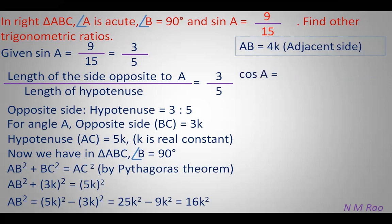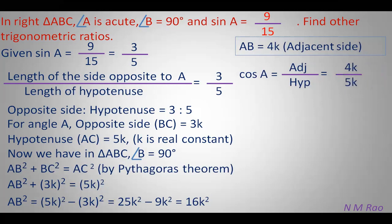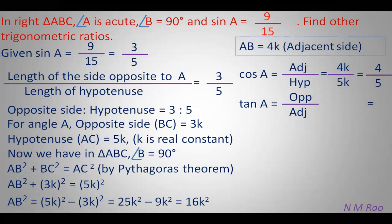Now we can determine the other trigonometric ratios. Cos A equals adjacent side to A upon hypotenuse, which is 4K upon 5K, expressed in lowest terms as 4/5. Tan A equals opposite side of A to adjacent side of A, which is 3K upon 4K, giving 3/4.